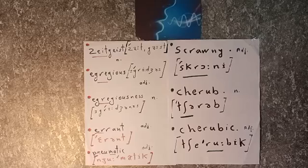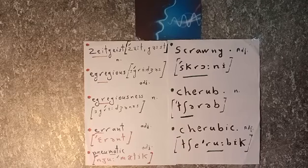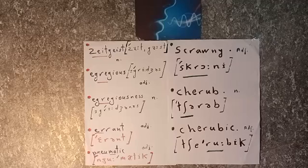This word is a noun and it's 'zeitgeist'. It's a disyllabic word which contains two vowel sounds. The first syllable carries the primary stress: 'zeit' — zeitgeist. It comes from the German language and it means the defining moment, or the spirit or mood of a particular period of history. By the way, 'zeit' means time and 'geist' means spirit.